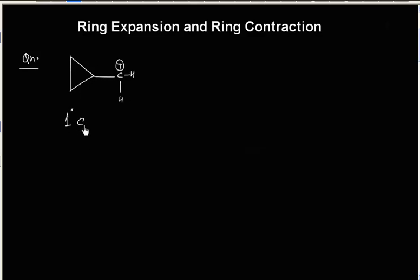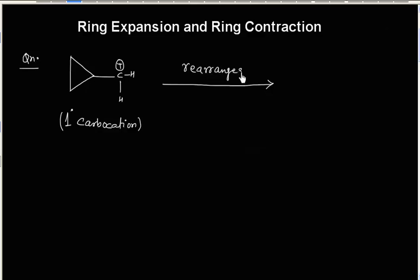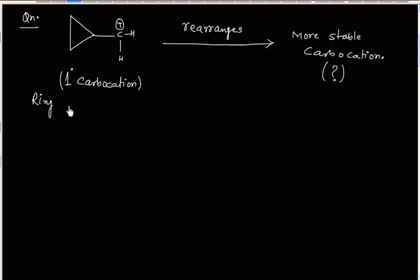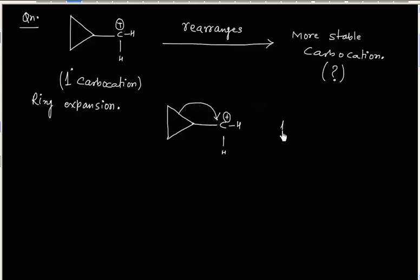This is a 1° carbocation and it rearranges to give a more stable carbocation. You have to write a structure of the more stable carbocation. This is a case of ring expansion. What we can do in this case is shift this alkyl group to this carbon — this is again a 1,2-alkyl shift.